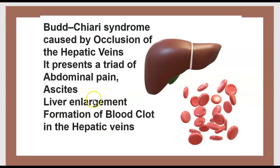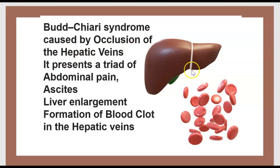Don't confuse Chiari syndrome with Budd-Chiari syndrome. Arnold-Chiari syndrome is about the foramen magnum. Budd-Chiari syndrome, on the other hand, is caused by occlusion of the hepatic vein, with a triad of abdominal pain, ascites, liver enlargement, and formation of a blood clot in the hepatic vein.